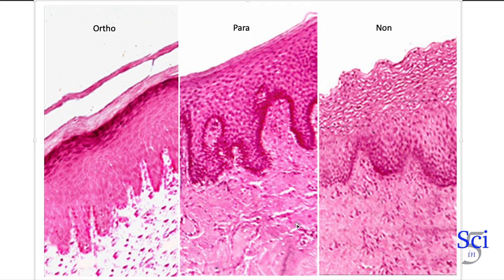Picking up from the last video where we talked about keratinocyte maturation, we're now looking histologically at what the keratinocytes actually look like under a slide. On the far left is orthokeratinized epithelia, the center is parakeratinized, and the right is non-keratinized epithelia.